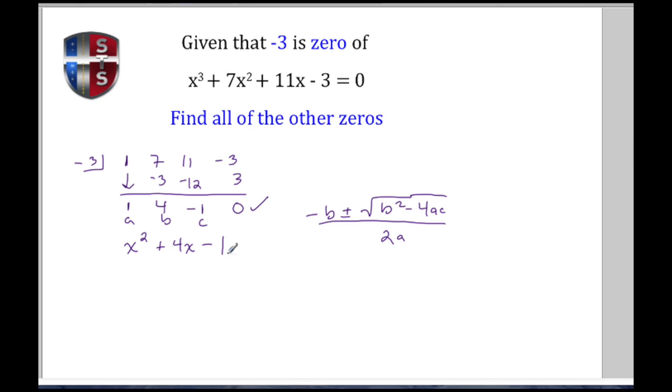At this point I just do a straight substitution. So -b will give me -4 ± √(b² which will be 4² which is 16, minus 4 times a which in this case is 1 and c is -1) all divided by 2 times 1, which is just 2.